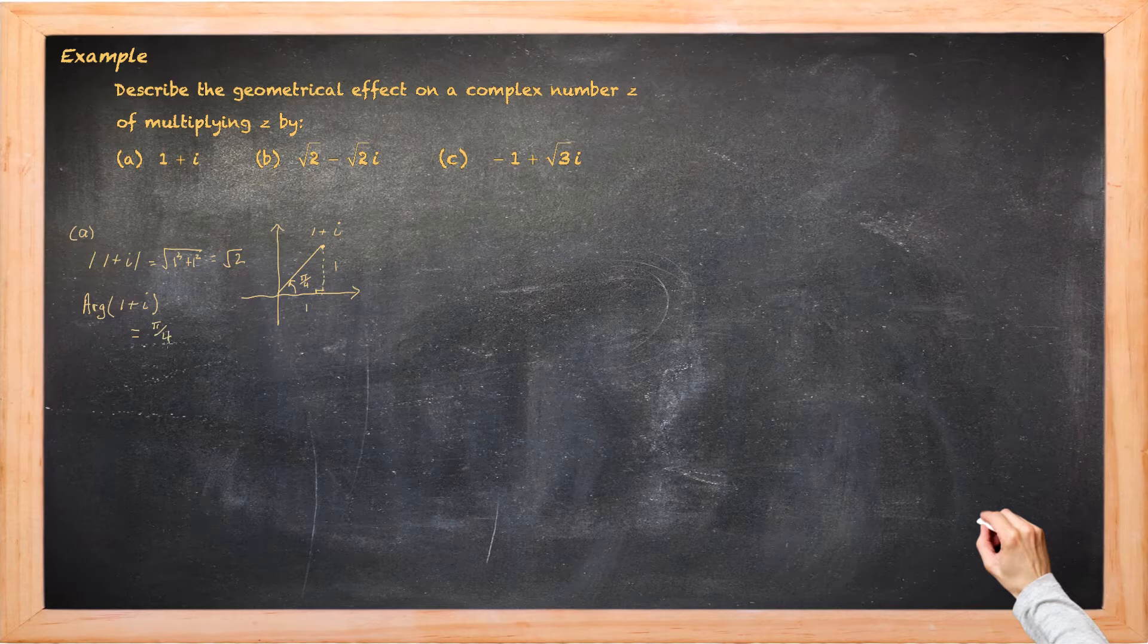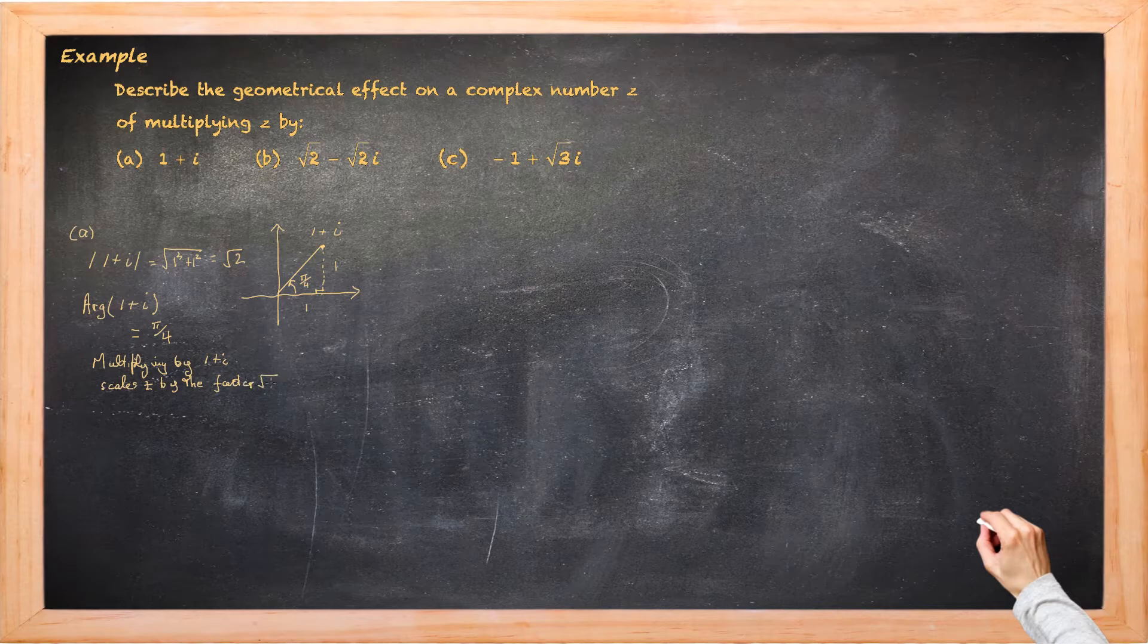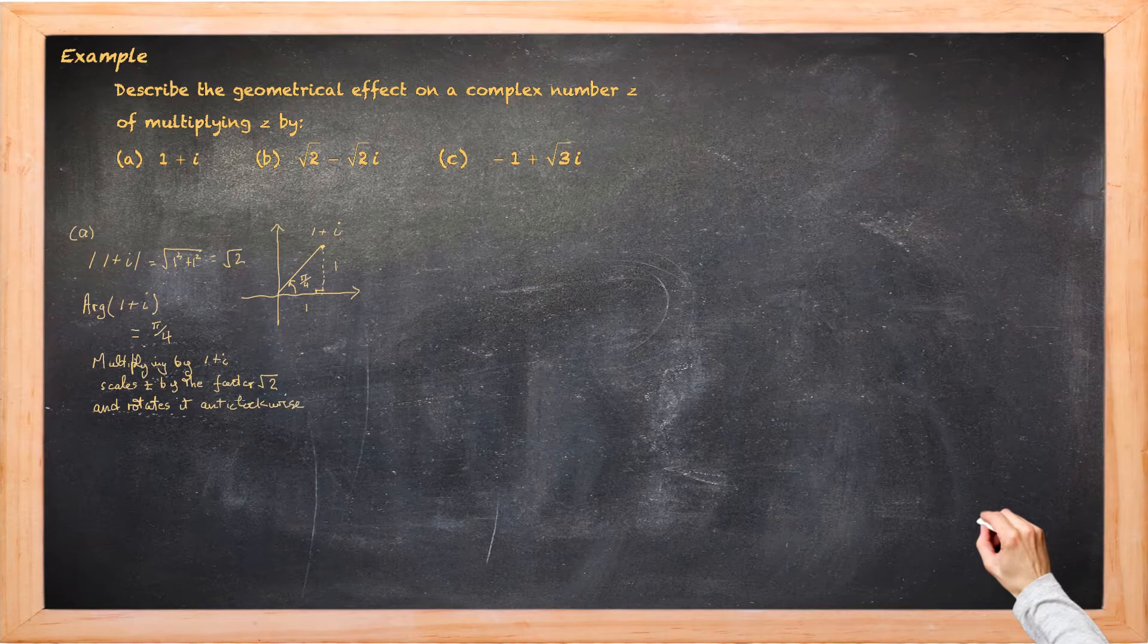So what does this all mean? Well first of all it means when we multiply by 1 plus i, this will scale z by a factor of root 2 and it will rotate it anti-clockwise through pi upon 4 about the origin.